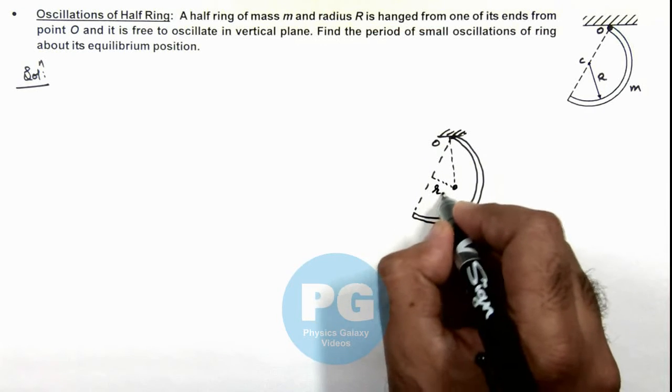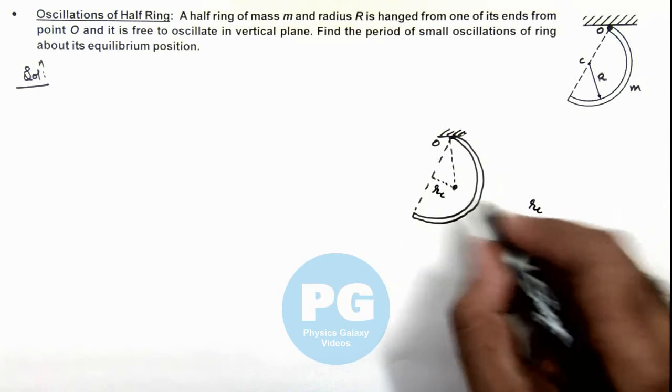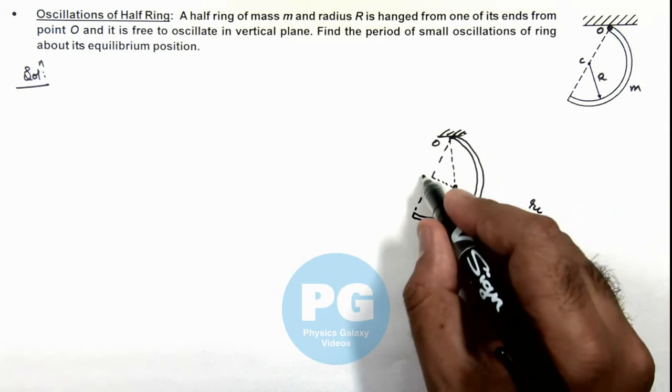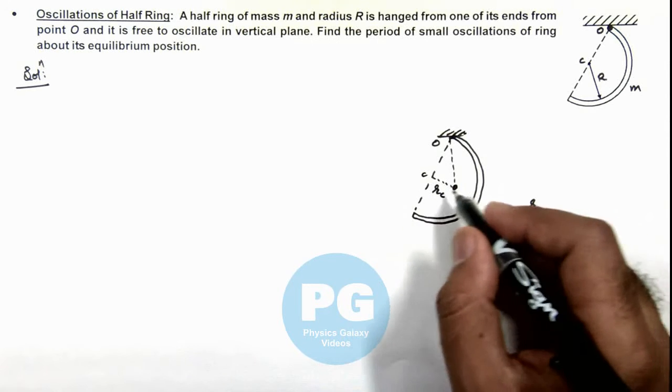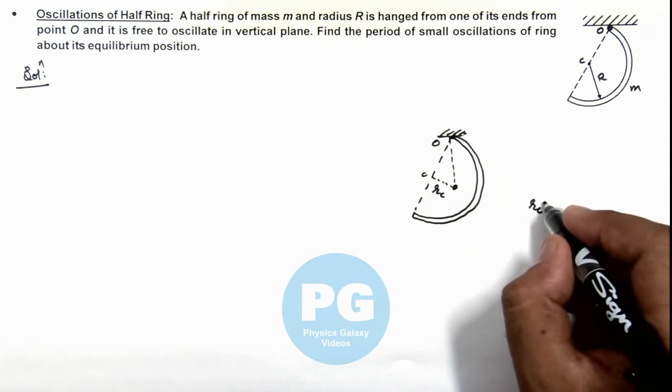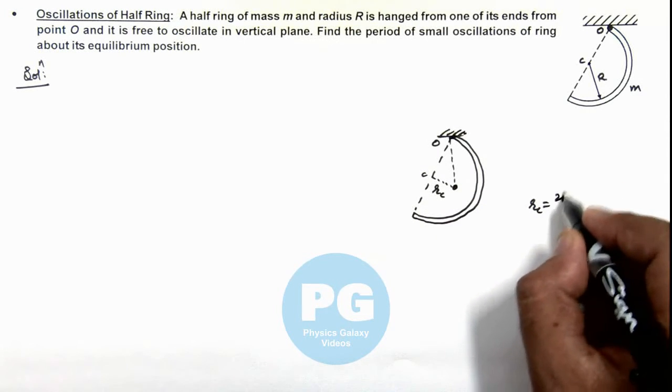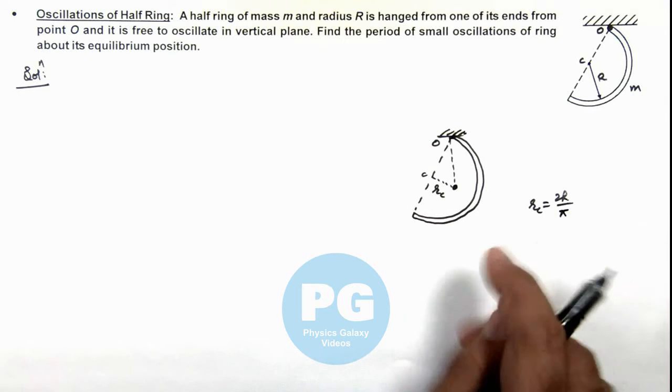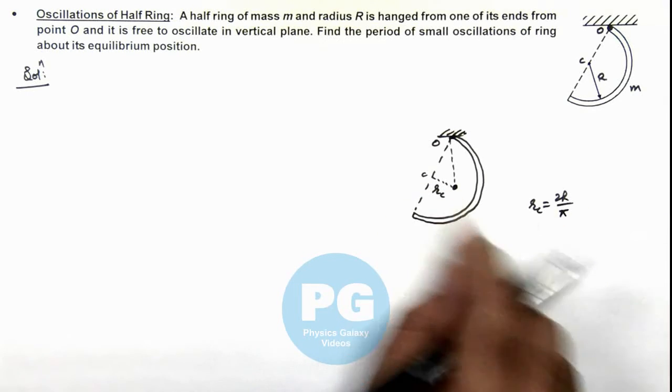If this is the distance of center of mass of this half ring from its center C, then we know the value of rc is equal to 2r by π. That is the distance of center of mass of a half ring from its center.